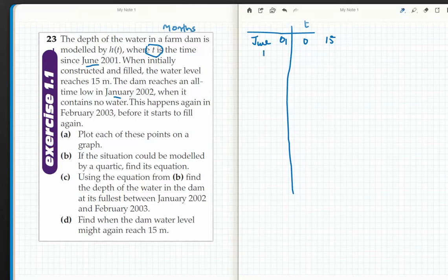Okay so July, August, September, October, November, December, January - I'm looking for January 02. So 1, 2, 3, 4, 5, 6, 7 is when it is zero, and it's an all-time low of zero.